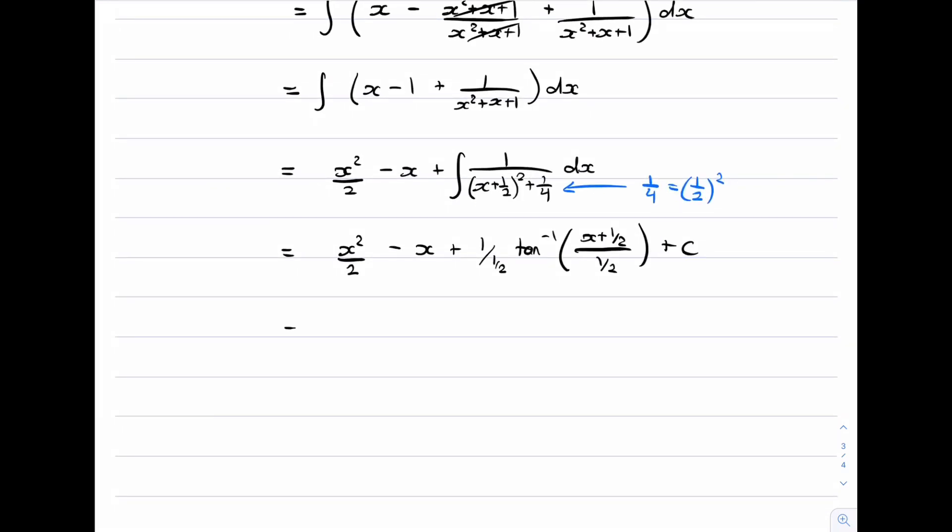And then we can tidy this up just a little bit. We get x squared on 2 minus x. 1 over a half is the same as 2. And then we have tan inverse of 2x plus 1 plus a constant. And that is our final answer.